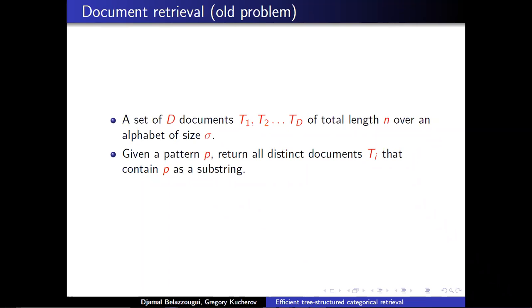In this problem we have a set of D documents of total length n over an alphabet of size sigma. Given a pattern, we want to return all the distinct documents that contain the pattern as a substring. This is different from the standard text matching problem, in which we return all the positions where the pattern occurs. Here we just return the distinct documents, so if a pattern appears one million times in one document, we just return the document just once.